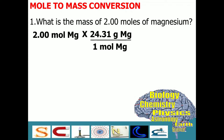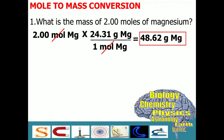So you have to remember that in every one mole of magnesium, it is equal to 24.31 grams. And since we already have a mole in the numerator and a mole in the denominator, we can cancel them out. With that, as we multiply 2 times 24.31, the result is 48.62 grams. And that is our answer.